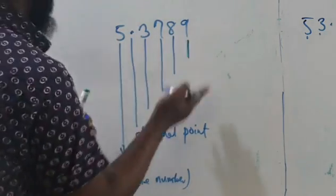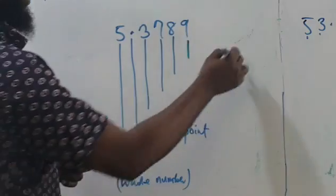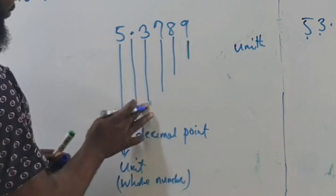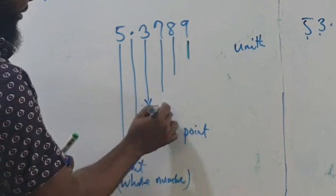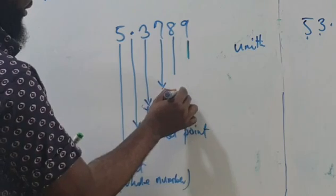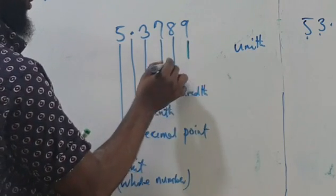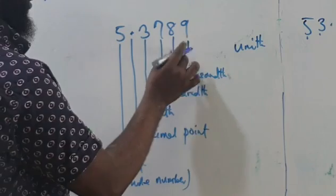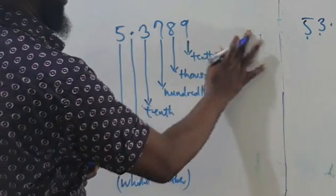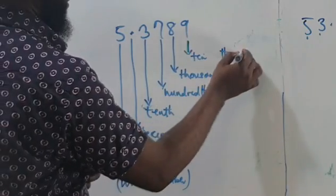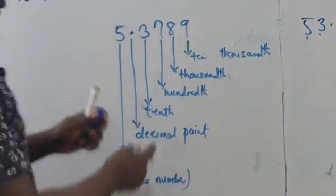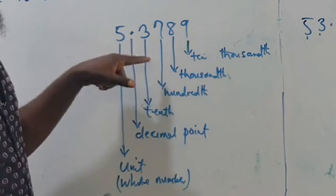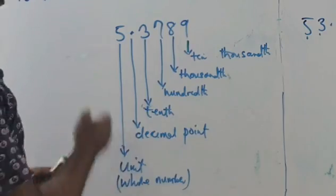Immediately after the decimal point, the next digit is tenths. Then the next one will be hundredths, then thousandths, then ten-thousandths, and so on. So if we are rounding to the nearest tenths, we are asking about the decimal place — we look at the digit after the decimal point and follow the same rules I just explained.